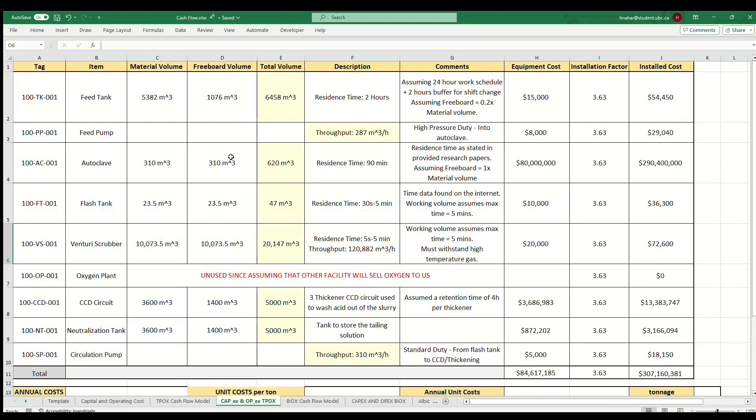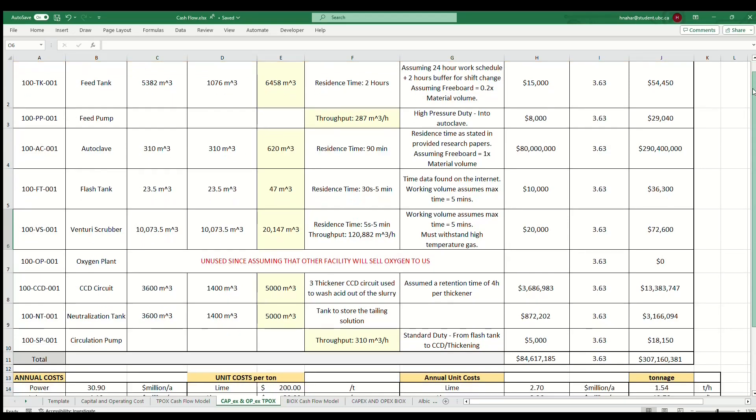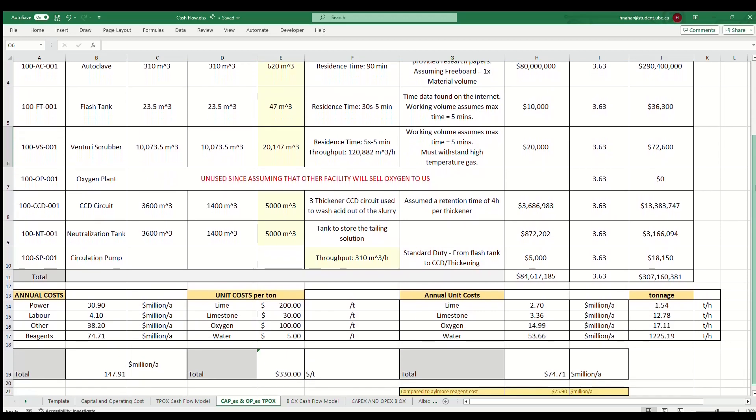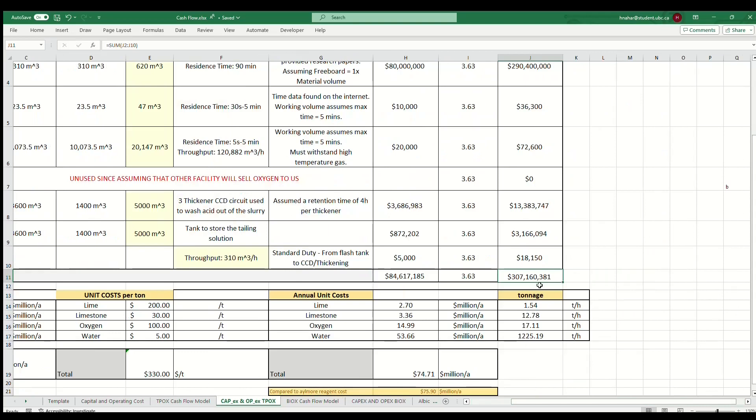This brings us to project cost estimation. Now that we have flow rates from the mass balance, we can use these to determine cost. An equipment list can be created. Mass flow rate determines equipment sizing, which is then used to determine capital cost.